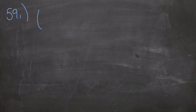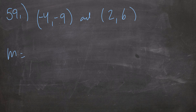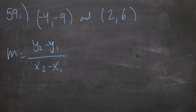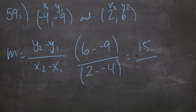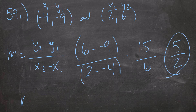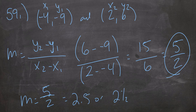59 gives you two points and I want you to find the slope. I have negative 4, negative 9 and 2, 6. To find the slope it's y2 minus y1 all over x2 minus x1. I'll call this one x1, y1, x2, y2. So I'm going to go 6 minus negative 9 all over 2 minus negative 4. That's 15 over 6. If you're plugging into your calculator, put it all in parentheses. Divide top and bottom by 3 and I end up with 5 halves — m equals 5 halves.